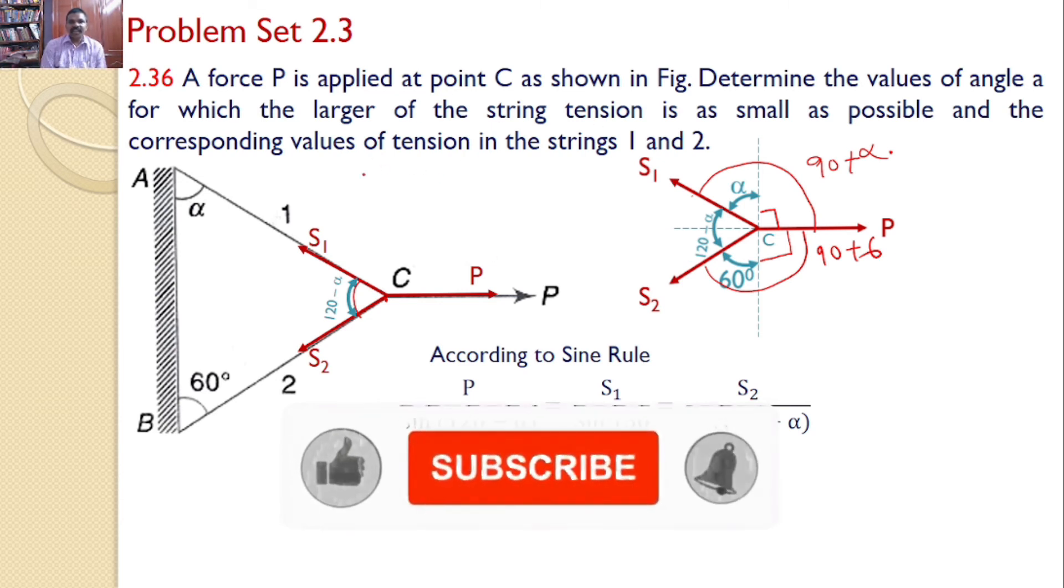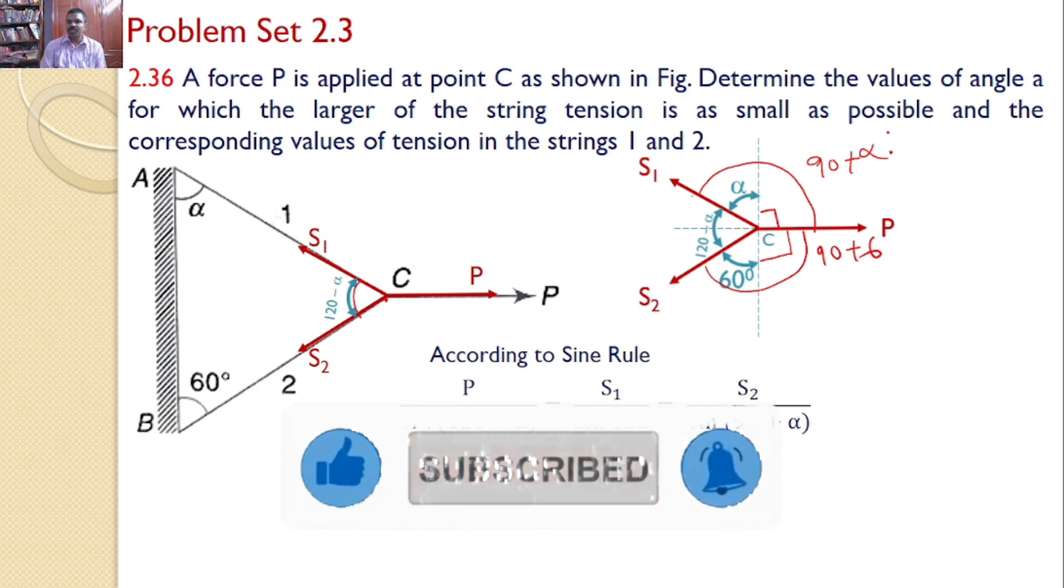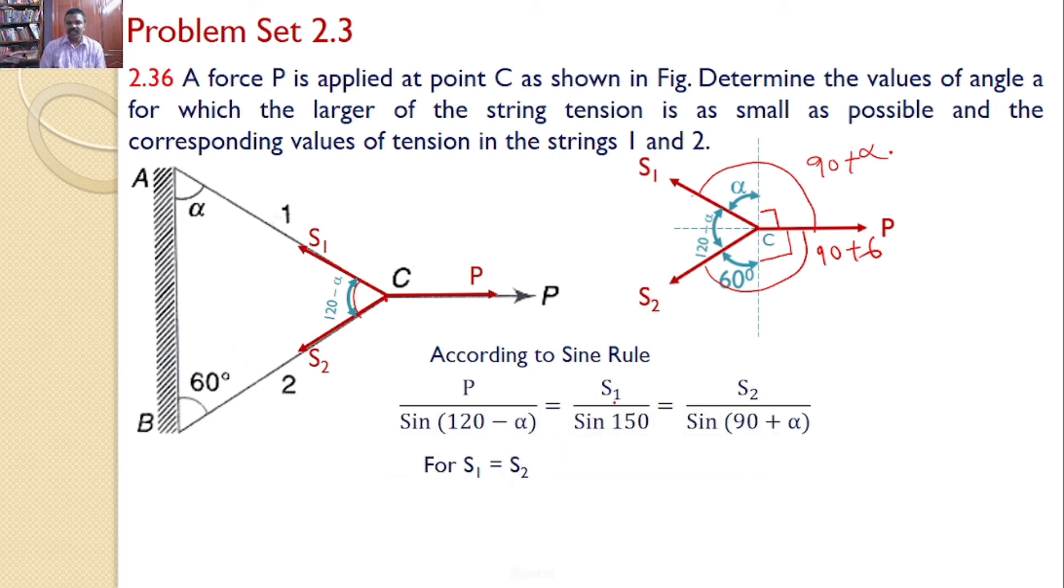In order to satisfy the condition that larger of this string tension is as small as possible, the only possible way is the two strings S1 and S2 must be the same. Now to take these two conditions. If S1 is equal to S2 then sine 150 must be equal to sine 90 plus alpha or you can say 150 is equal to 90 plus alpha. After simplifying I will get alpha is equal to 60 degrees.